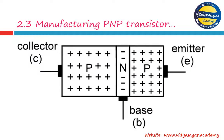PNP transistor manufacturing is done similarly — exactly opposite to NPN. In this, a small N layer (base layer) is sandwiched between two P layers. There are three layers — collector layer, emitter layer, and base layer — and three terminals: collector, base, and emitter. The working of PNP is exactly opposite to NPN.